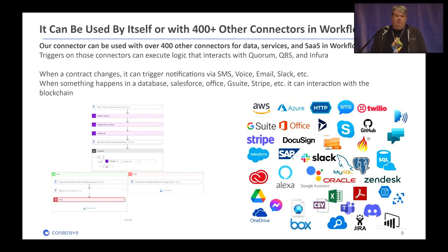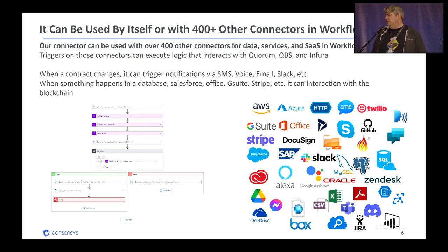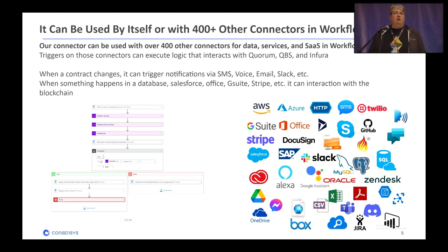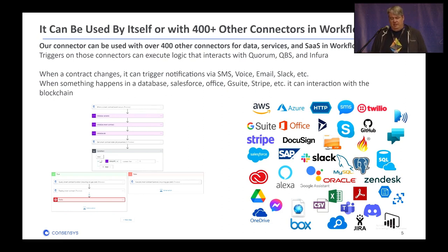The big thing here is it's got 400 connectors. One we'll demo today is from Twilio, so we can do SMS messages as a result. We can also do voice interactions — I've done demos where something happens on-chain as a trigger, it will call you, ask you a question, you press 1 or 2, and then it will send things back on-chain. This is going to allow you to do a lot more things much more quickly. Even if you want to write all the code yourself, this will help you prototype scenarios to prove them out. For folks looking for investors, it really shows the art of the possible.